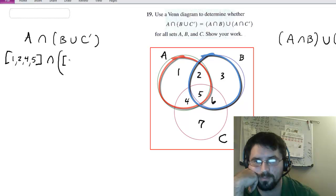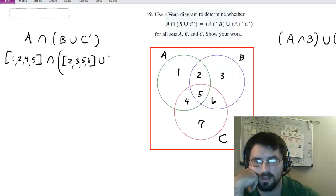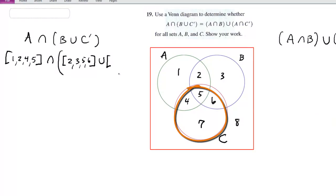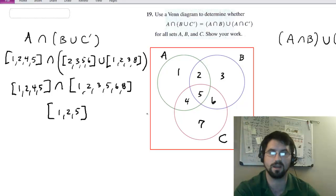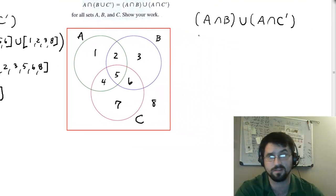Region B is two, three, five, and six. We're going to unite that with C complement. C complement is everything that is not C. C is four, five, six, seven. So C complement is one, two, three, eight. Since I'm uniting these, I'm going to put these together and I'll get one, two, three, five, six, and eight. And then I'll look for where does that overlap? What does it have in common with A? And the answer is one, two, and five. So that's my result on the left side. And hopefully over here on the right side I'll get the same result.